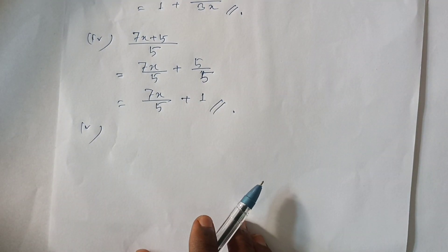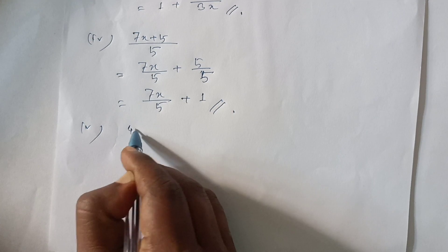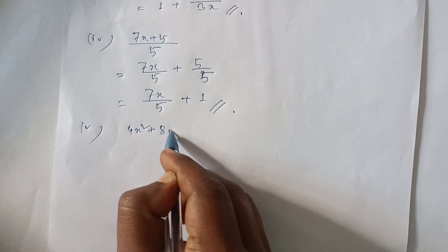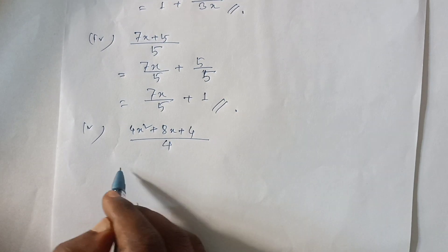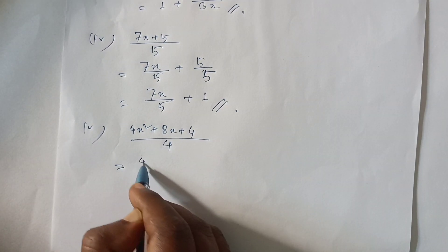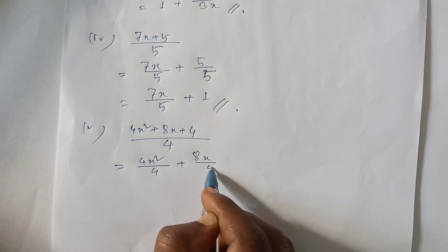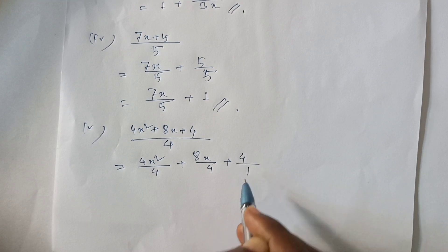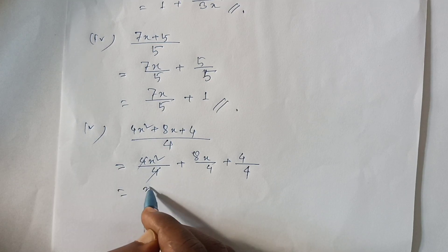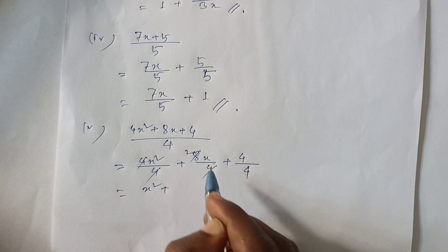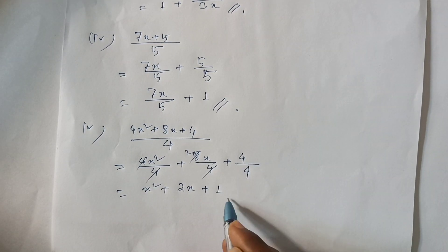First, number two: 4x² plus 8x plus 4, divided by 4. It's going to be 4x² by 4, plus 8x by 4, plus 4 by 4. That makes x² plus 2x plus 1.